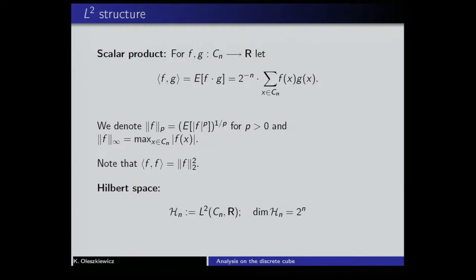Given this scalar product, we can obviously introduce a Hilbert space of all real-valued functions on the discrete cube of size n. Since the cube has 2^n vertices, the dimension over the reals of this Hilbert space is 2^n.